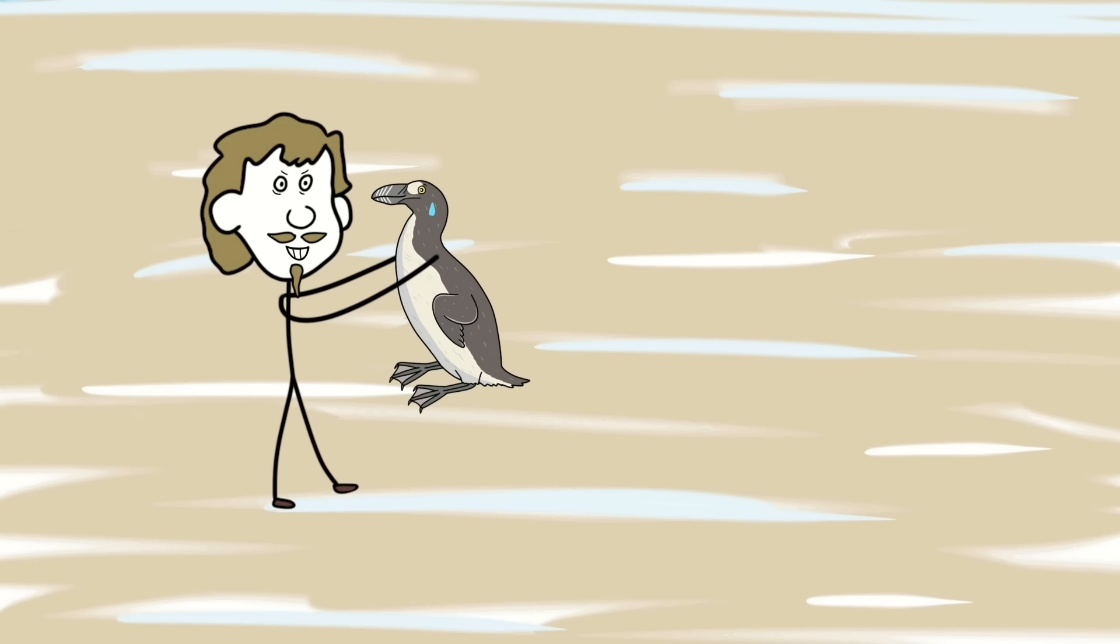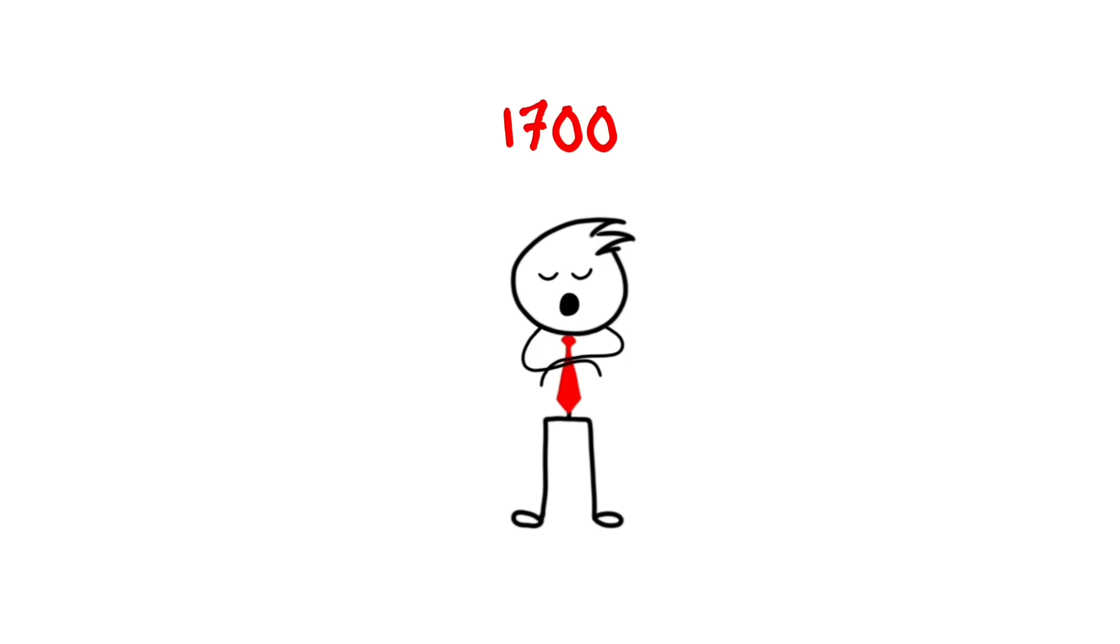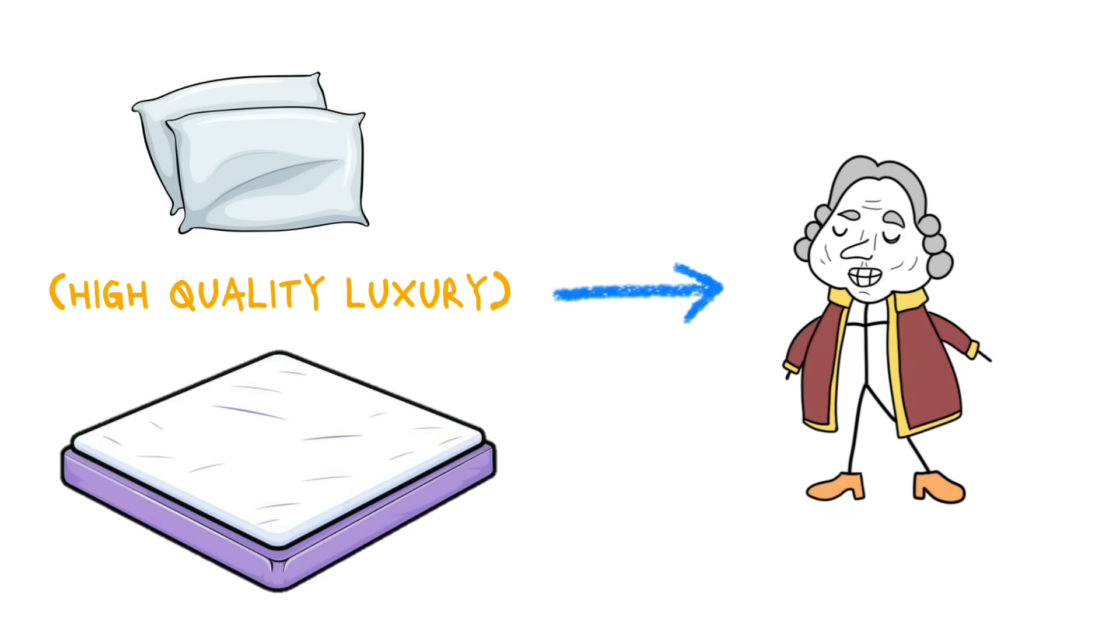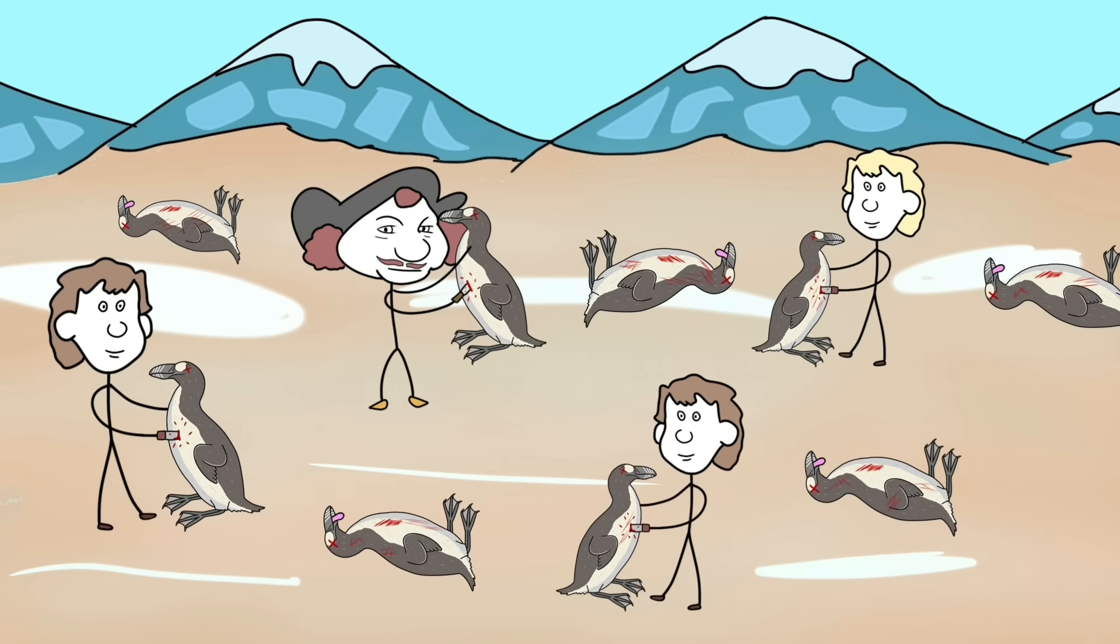The hunting escalated, and many other travelers found out about easy food. Later in the 1700s, the pillows and mattresses from auk downs were high-quality luxury for nobles. So, more hunting was done.